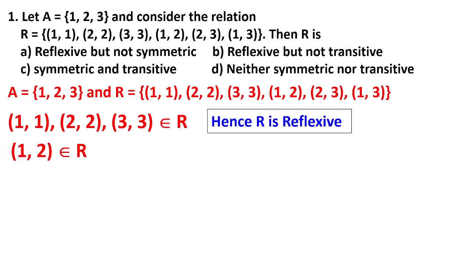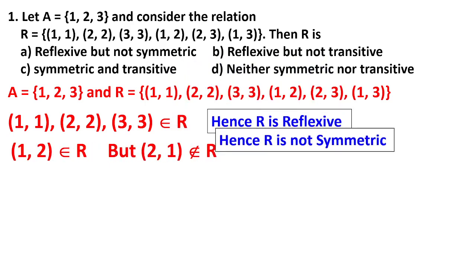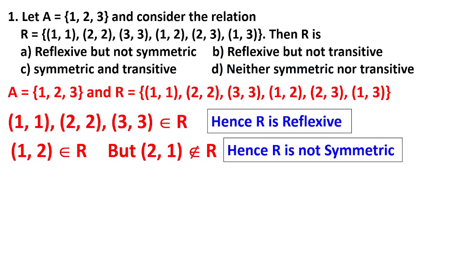To check symmetry: if (1,2) is in R, meaning 1 is related to 2, then 2 should be related to 1. Checking whether (2,1) is there — no, (2,1) is not there. Therefore it is not symmetric. So the answer so far is: reflexive but not symmetric. Let us also check whether it is transitive.